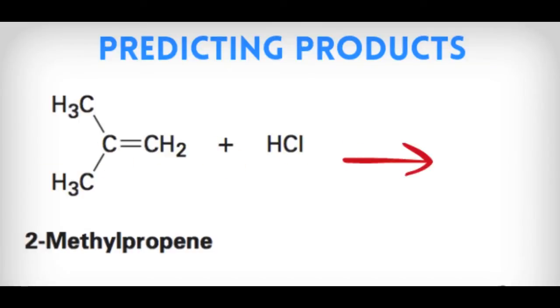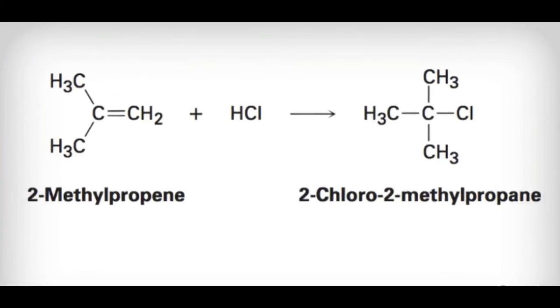Let's predict the products here. We have 2-methylpropene and we're adding HCl to it. One of the carbons is going to get the hydrogen attached, and one of them is going to get the chlorine attached. The product, as you can see, is that we added to a carbon — that carbon got the chlorine, and the other carbon got the hydrogen. The second carbon was the one that got the chlorine.